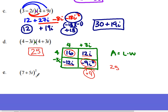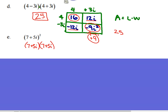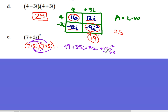For (7 plus 5i) squared, write it out as (7 plus 5i)(7 plus 5i). Using distributive property: 7 times 7 is 49, 7 times 5i is 35i, 5i times 7 is another 35i, and 5i times 5i is 25i squared. Since i squared equals negative 1, we get negative 25. So 49 minus 25 is 24, and 35i plus 35i is 70i. Final answer: 24 plus 70i.